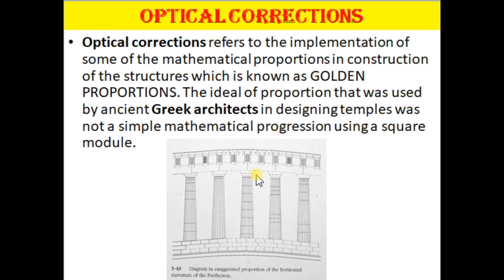Optical corrections refer to the application of certain mathematical proportions in the construction of structures, known as the golden proportion. The ideal proportion used by ancient Greek architects in designing temples was not simple mathematical progressions using square modules. The center is slightly elevated so that in views all three orders appear in one straight line.